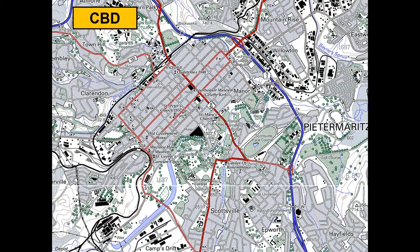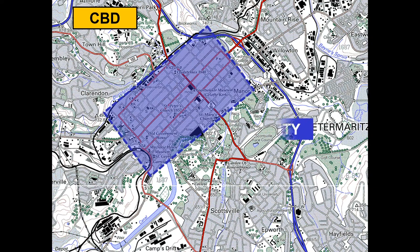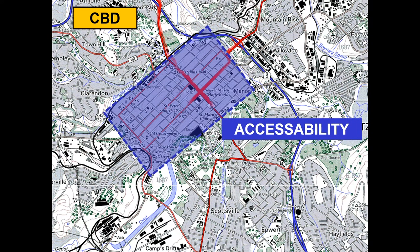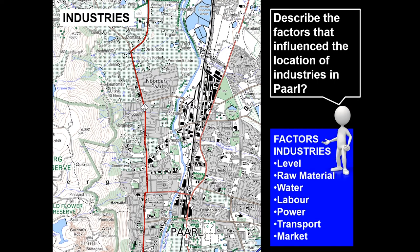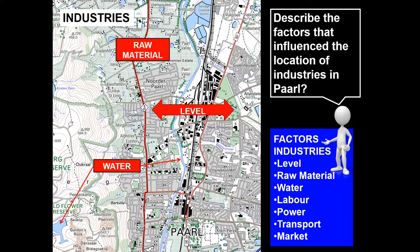When identifying the CBD on a map, you have to have accessibility — highlighted will be the roads leading into our CBD. We can ask you to describe the factors that influence the location of industries. Your theory and map work knowledge marry each other here. You need to know factors such as level land, access to raw material, availability of water, a labour force close by, electricity, transport routes, as well as a market.